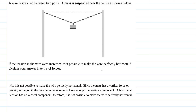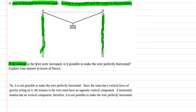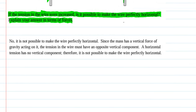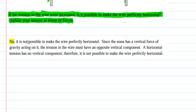Here's one last question: a wire is stretched between two posts and a mass is suspended near the center. The question asks whether increasing the tension could make the wire perfectly horizontal. The answer is no — since the mass has a vertical force of gravity acting on it, the tension in the wire must have an opposite vertical component.